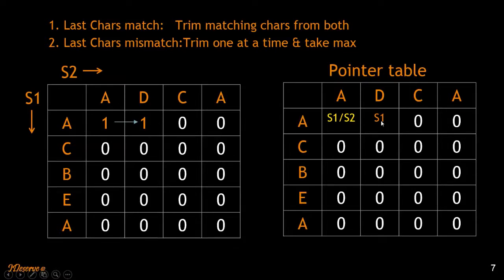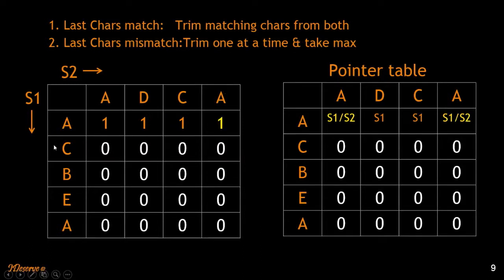The simple rule for the pointer table is: if you are trimming S2, pick S1; if you are trimming S1, pick S2; if you are trimming both, you can pick either. Let's finish up the table. A and C do not match, so we move ahead. Then A and A match, so we move down. The strings in consideration are AC and A — C does not match A. We trim AC, and LCS of A and A is 1, so we move that count. LCS of AC and A is LCS of A and A, which is 1.